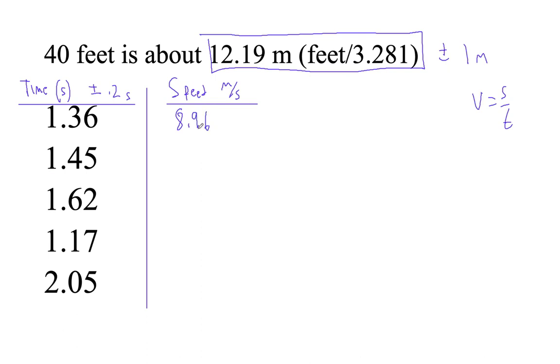And 12.19 divided by 1.45 is 8.41, roughly. I'm just rounding. These are meters per second. You don't need to label all of these seconds and meters per second. You can do it in the column header.